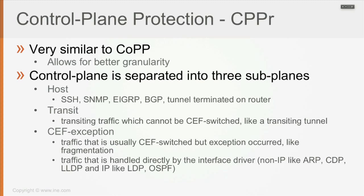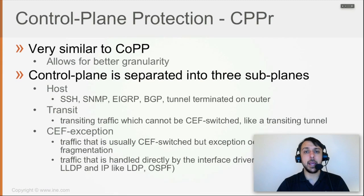Based on which protocols you want to block from reaching the CPU or limit the number of packets received by the CPU, you configure CPPr under the host sub-plane, the transit sub-plane, or the CEF exception sub-plane. You'll generally use CPPr because it offers better granularity, but otherwise the configuration is the same as CoPP — CPPr also uses MQC syntax with class maps, policy maps, and service policies. It's just a matter of where the policy is enforced.